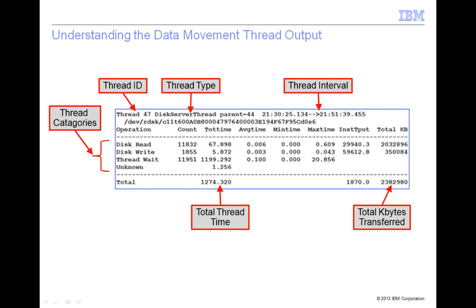It represents the total measurement time for this thread. The total kilobytes transferred is the total amount of data transferred by this thread for this measurement. It is sometimes useful to match this value with other threads to find threads that are performing associated operations.